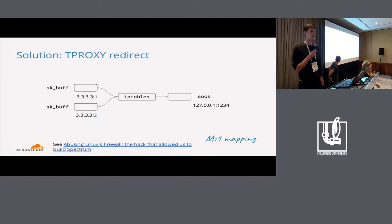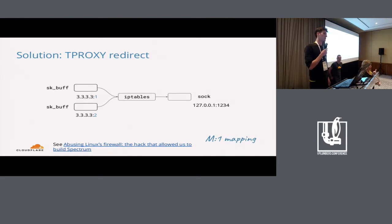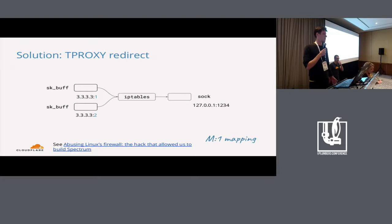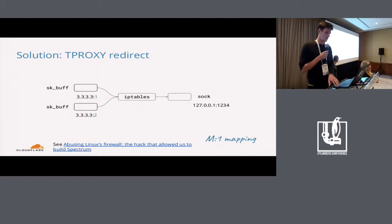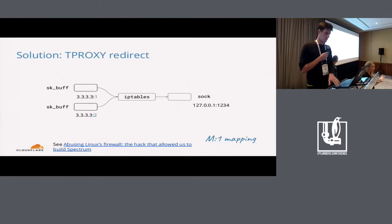We find another hack. There's a fairly obscure IP tables action called tproxy, which I think stands for transparent proxy. The idea is that in the firewall, we can inspect a packet buffer, look at its destination IP address, and if it matches any rule we want, we can force it to go to a specific magic socket that we've set up previously. This works brilliantly once you get it to work — doing that is a bit involved, but it works for us. We have this kind of many-to-one mapping, we can create it multiple times, and everything is well.